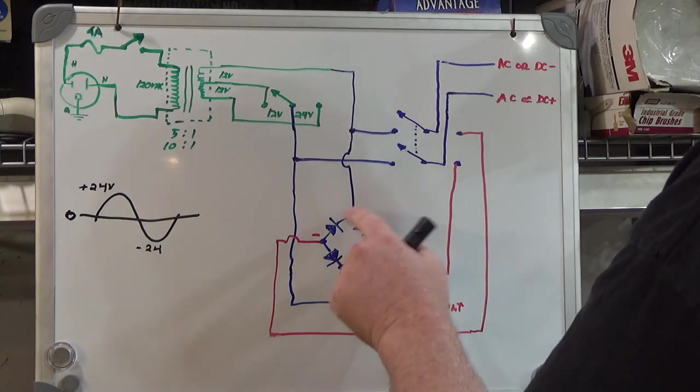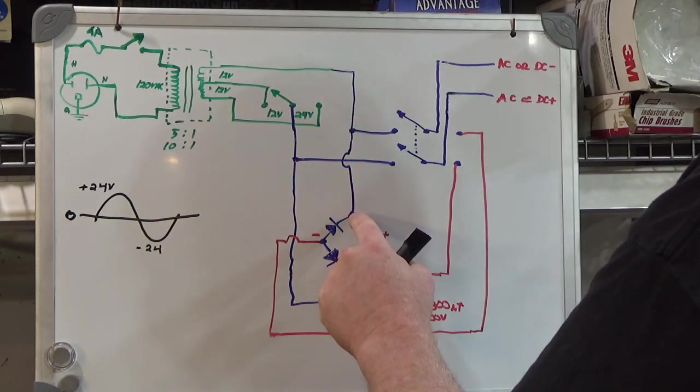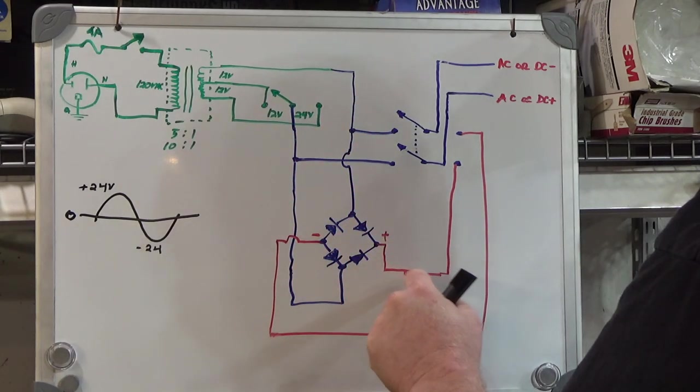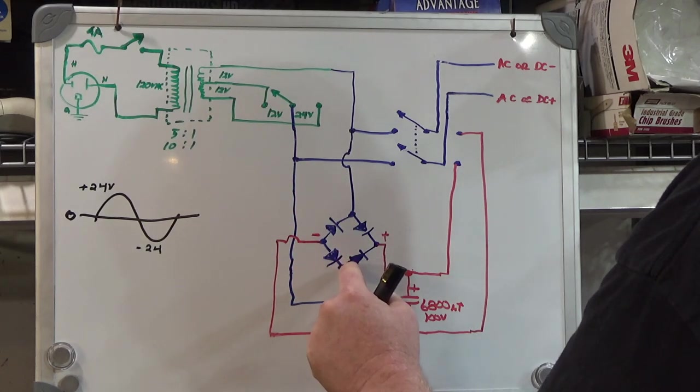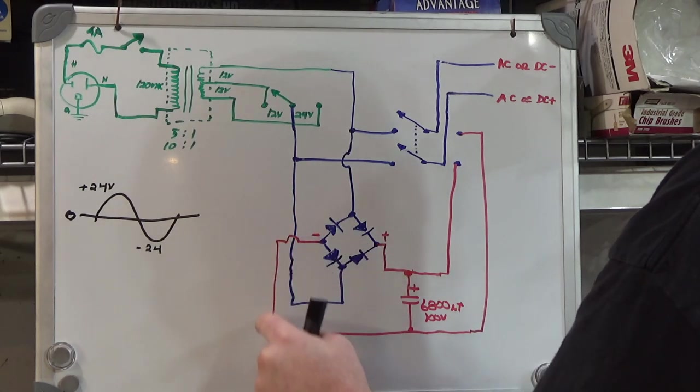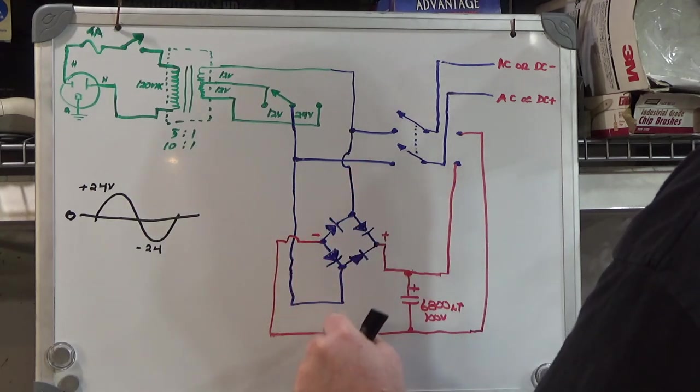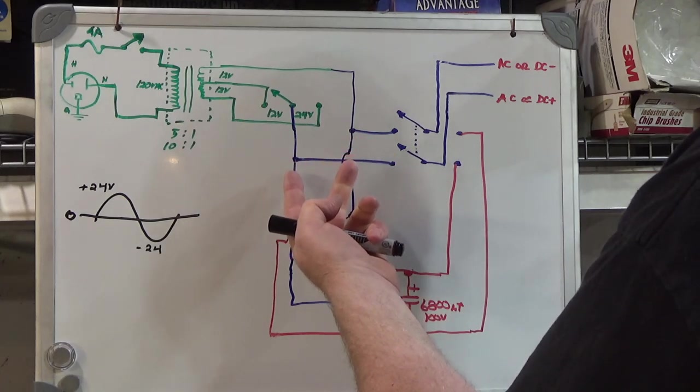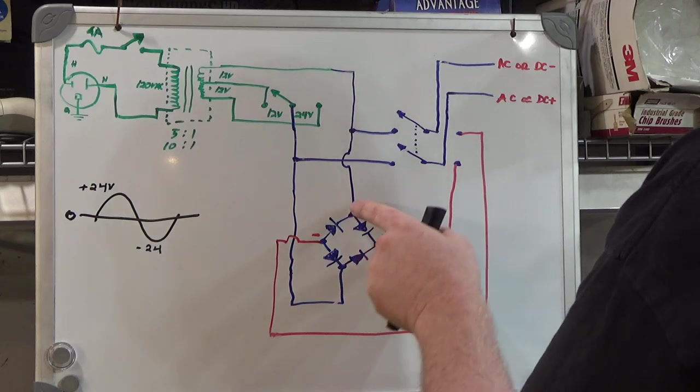These only conduct in one direction. So when this side is positive, this diode conducts and it comes out the positive side. This side conducts through this diode and goes to the negative side. So your positive goes through here out, negative comes up through here and out.